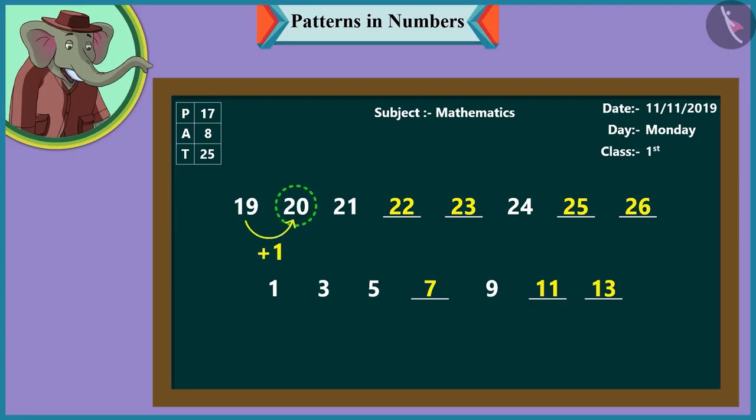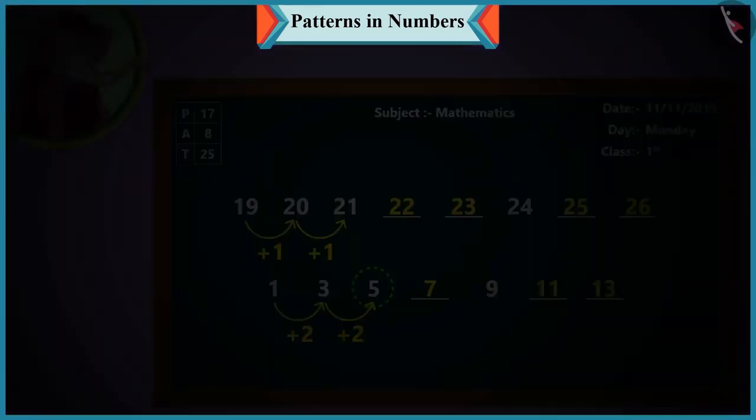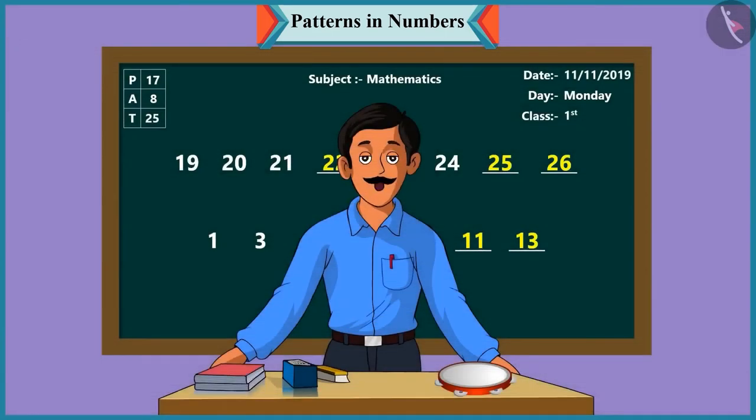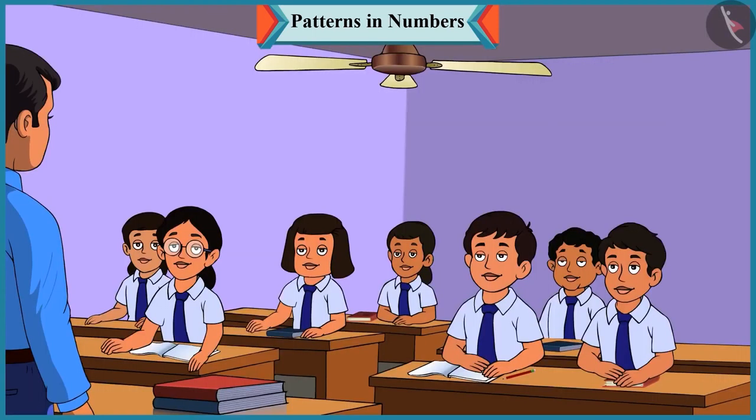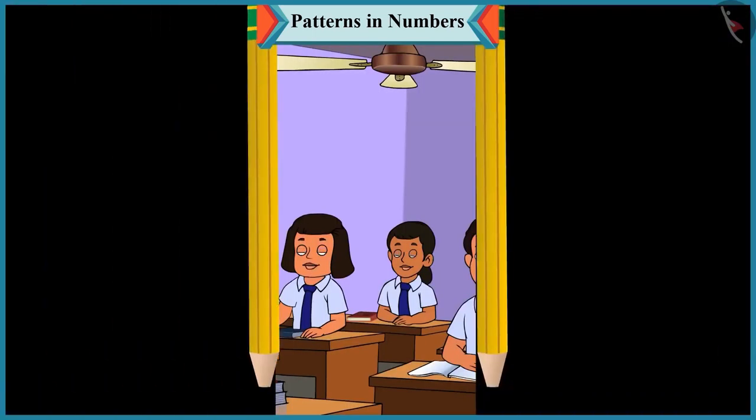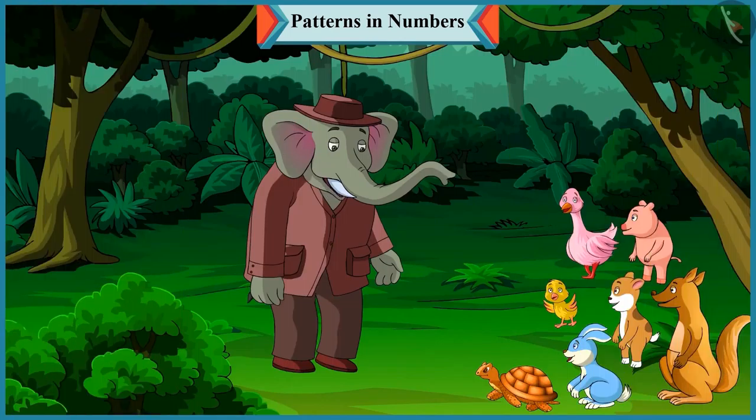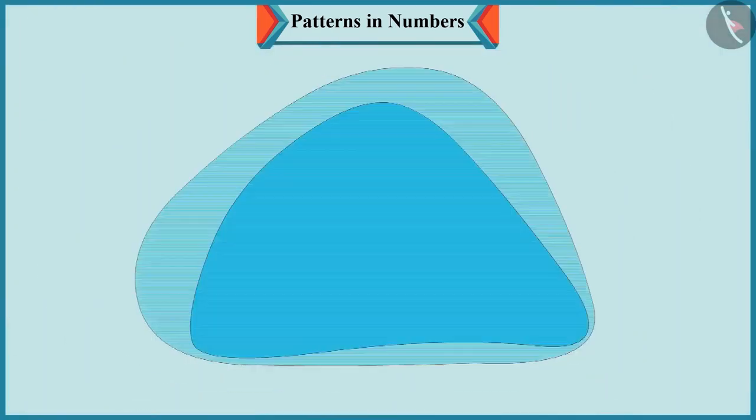Children, here in the first number pattern, one has been added to each number to take it forward. Like adding one to nineteen makes twenty. And adding one to twenty makes twenty-one. And in the next pattern, two has been added to each number to proceed with the pattern. Like adding one and two makes three. And adding two to three makes it five. Children, tomorrow we will see more number patterns. Till then, bye children.